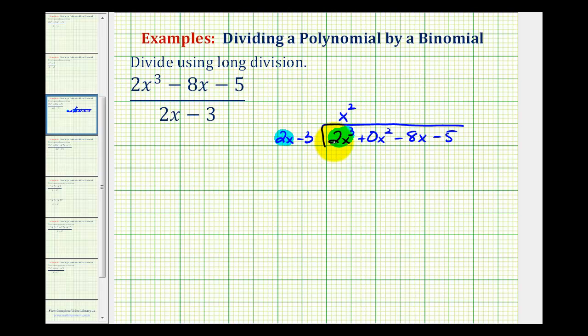But we are performing division here, so another way to find this first term would be to divide 2x cubed by 2x. Notice how the result is x squared, our first term.